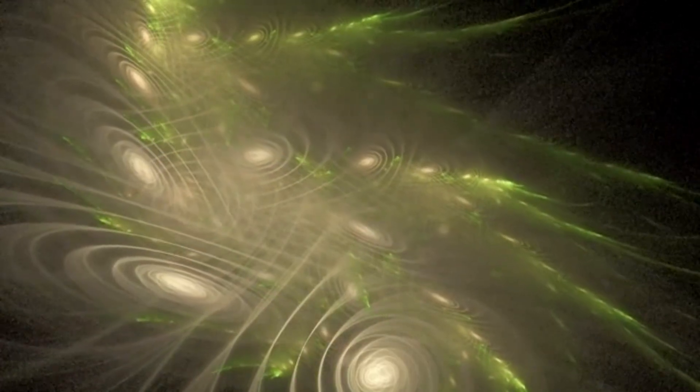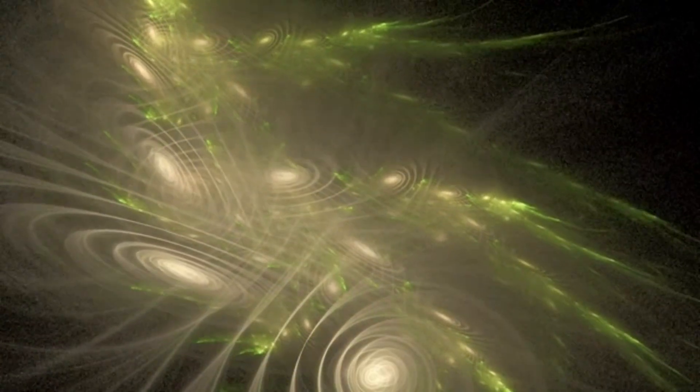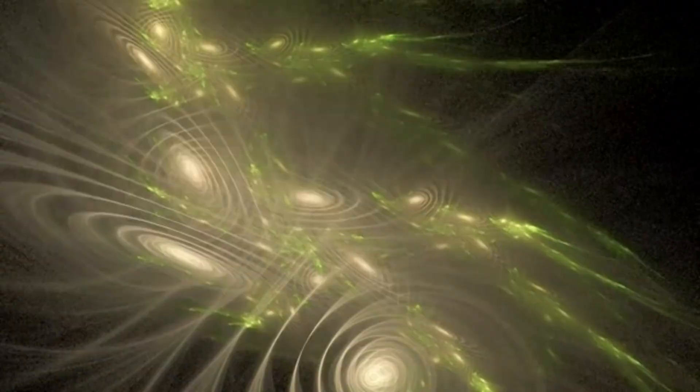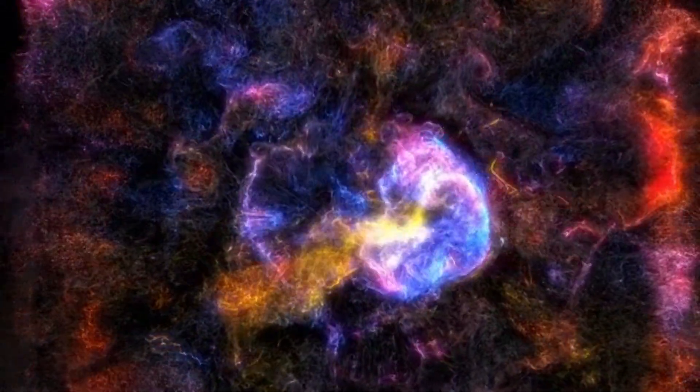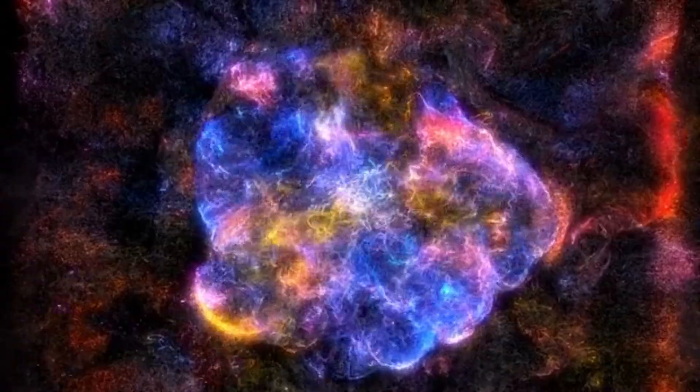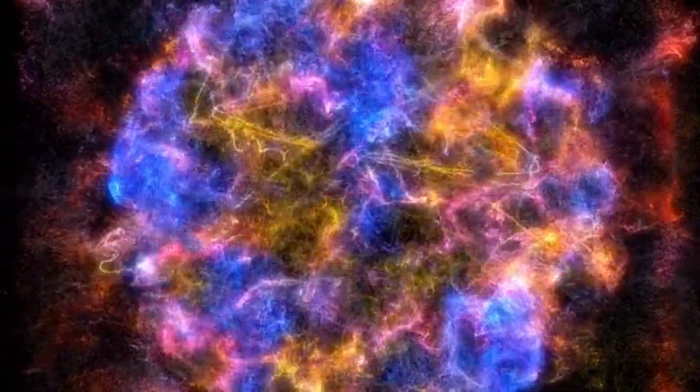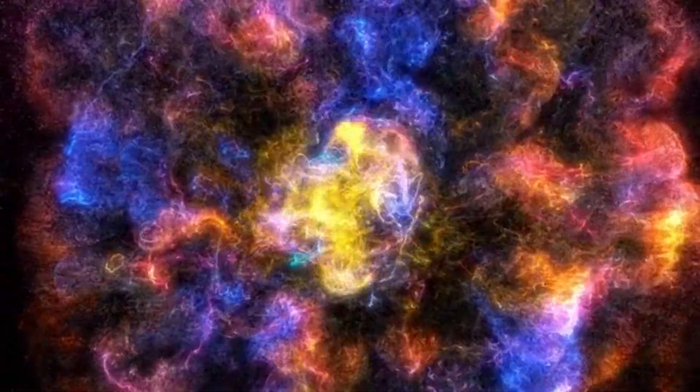They would emit gravitational waves, yes, but faint and rare ones. They might cause sudden bursts of radiation, but hard to distinguish. Visual proof has always been tantalizingly out of reach. Until this lensing anomaly. The researchers, using Webb's powerful infrared capabilities, have offered the clearest image yet of what might be a cosmic string slicing through space.